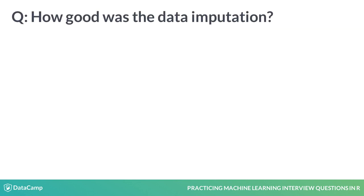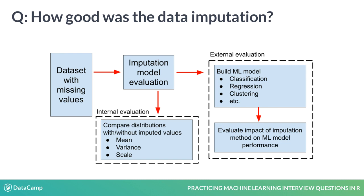Evaluating the quality of an imputation is also an important issue. You can do that in two different ways. An external evaluation relies on building a machine learning model from the imputed dataset, then assessing its performance as a function of the imputation method alone — all else being equal, this should give us a good indication of how beneficial that imputation was to our entire machine learning pipeline. An internal evaluation compares the distributions of the variables before and after the imputation, in terms of their mean, variance, and scale. Ideally, you want an imputation model that does not drastically change the distribution of the imputed variables or their relationships. Big changes in these indicators could signal a problem with the imputation.